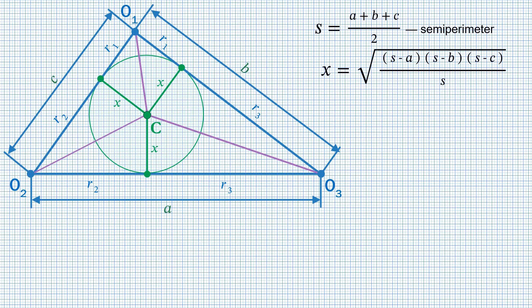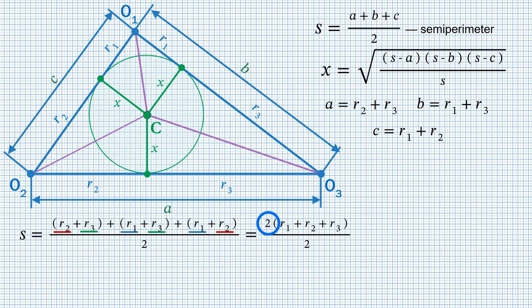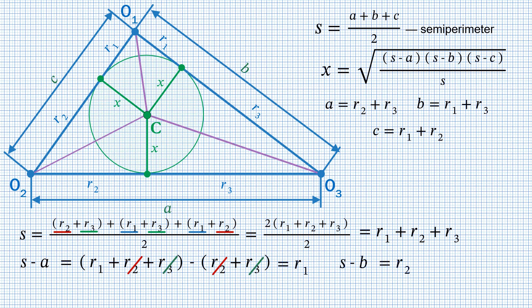Now we need to express the sides of the triangle in terms of radii R1, R2 and R3. It can be seen that A equals R2 plus R3, B equals R1 plus R3, and C equals R1 plus R2. Evaluating the semi-perimeter, each radius appears exactly twice, so the factors of 2 cancel and we get just the sum of the radii. For the other Heron's formula factors: S minus A equals R1, S minus B equals R2, and S minus C equals R3.